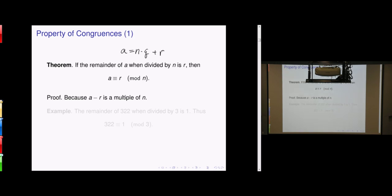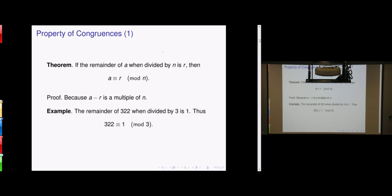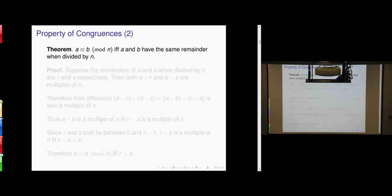By definition, a and r are congruent modulo n. For example, 322 divided by 3 gives remainder 1, so 322 is congruent to 1 modulo 3. Another simple observation: a and b are congruent modulo n if and only if a and b have the same remainder when divided by n.